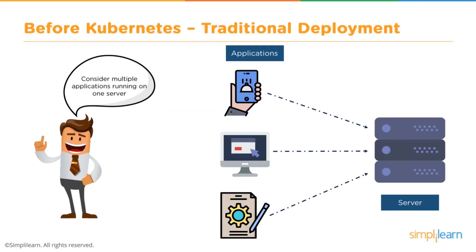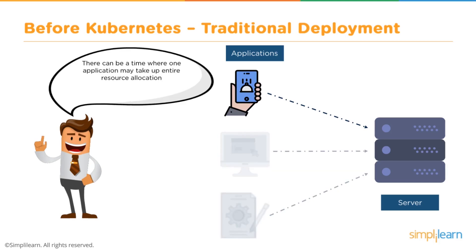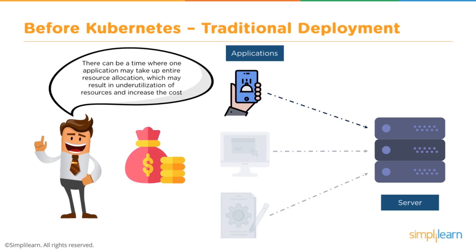When you have applications running on multiple machines you run into the potential risk that the setup and configuration of each of those machines isn't going to be consistent, and your code isn't going to work effectively. There may be issues with uptime and errors, problems with resource allocation, and applications may not be load balanced effectively. This gets very expensive, and you can only install one piece of software on one piece of hardware, so your hardware is being massively underutilized.